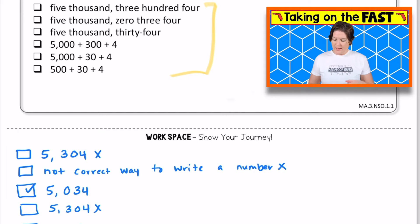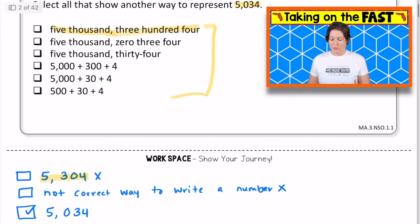For the first one, it says we have 5,304. Well, I wrote that one in word form, 5,304, which is not the same thing that we're looking for. So I eliminated that one. The next one is 5,034, and I said this is not a correct way to write that number. So we can eliminate that one too.